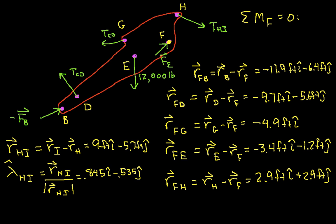Okay, here they are. So, we have the relative position vectors between the point F, about which we are computing our moment, and all the other points that we have forces going through, as well as the direction vector for lambda HI. So, the vector THI will be the magnitude times lambda hat HI.